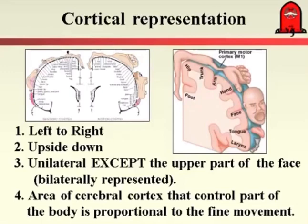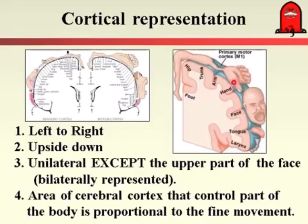Another property of the arrangement of motor nerve cells is that the area of the cerebral cortex controlling a part of the body is proportional to the fine movement produced. Since the tongue, fingers, and face are responsible for fine and delicate movement, the cells controlling these skeletal muscles are very large in number — proportional to the skillfulness produced by that specific muscle.